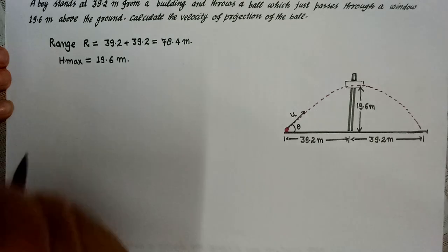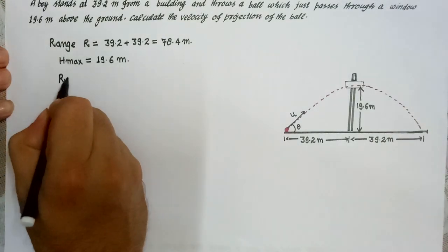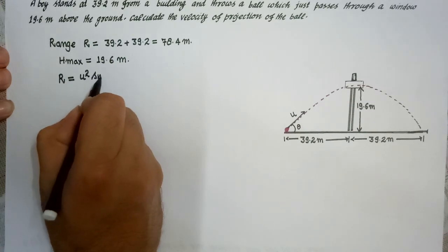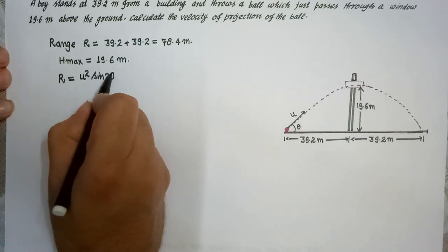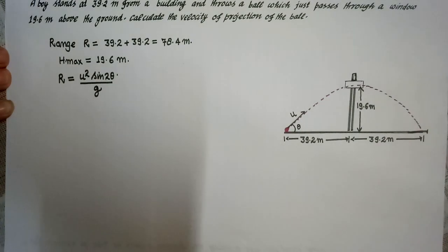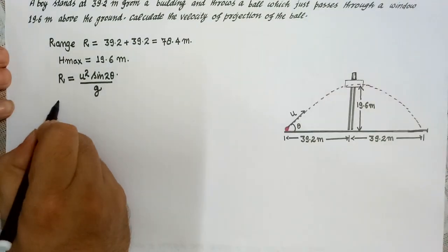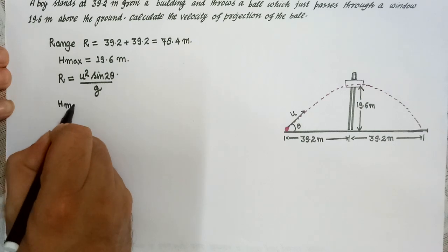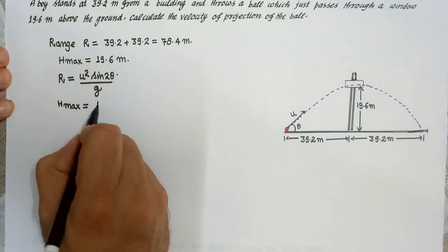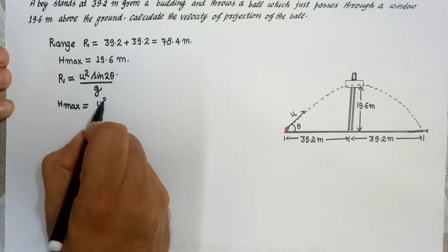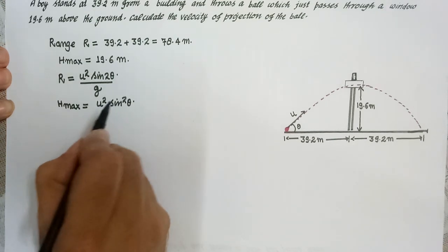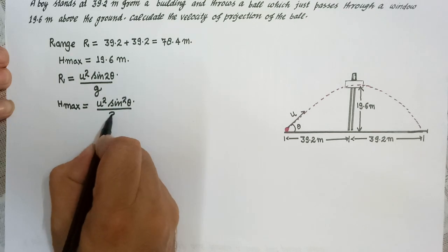Range का formula है: R = u² sin2θ / g। यह range का formula है। Maximum height का formula है: H = u² sin²θ / 2g।